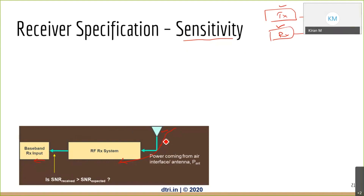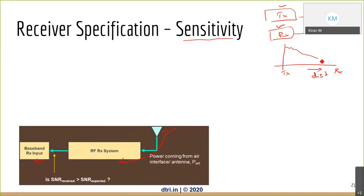As the signal travels from transmitter to air to tower and back, its signal power reduces significantly. If I plot signal level versus distance, you can see it would have reduced greatly. The signal power you transmitted will be very, very small by the time it reaches the receiver.